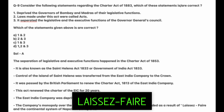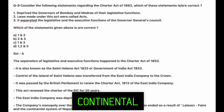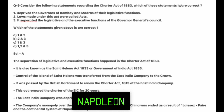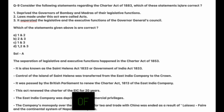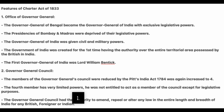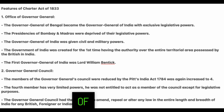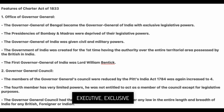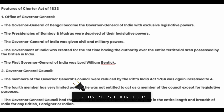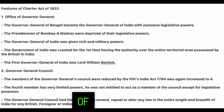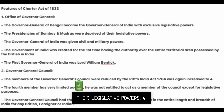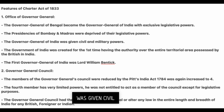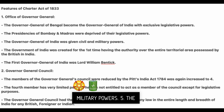The company's monopoly over trade, except for tea and trade with China, was ended as a result of laissez-faire and the continental system of Napoleon Bonaparte. Features of the Charter Act of 1833: The Governor General of Bengal became the Governor General of India with exclusive legislative powers. The presidencies of Bombay and Madras were deprived of their legislative powers.